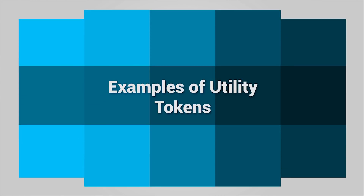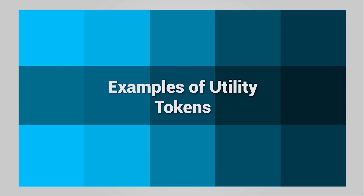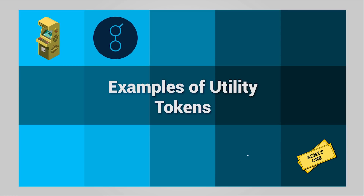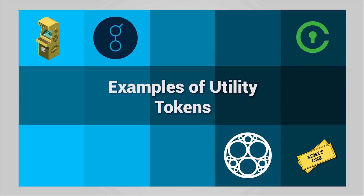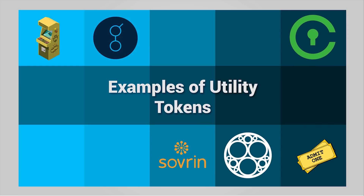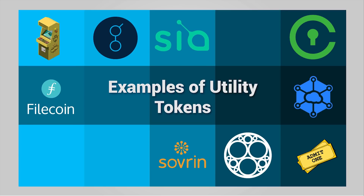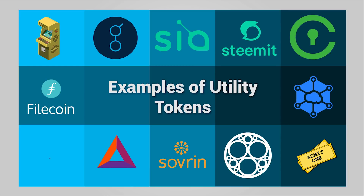Some examples of tokens that could be considered utility tokens are: for entertainment access — theme park tickets, video game arcade tokens; for compute power access — Golem, Sonom; for identity services access — Civic, Sovereign; for storage services access — Filecoin, Storage, Siacoin; and for content or information access — Basic Attention Token, Steemit, Augur.